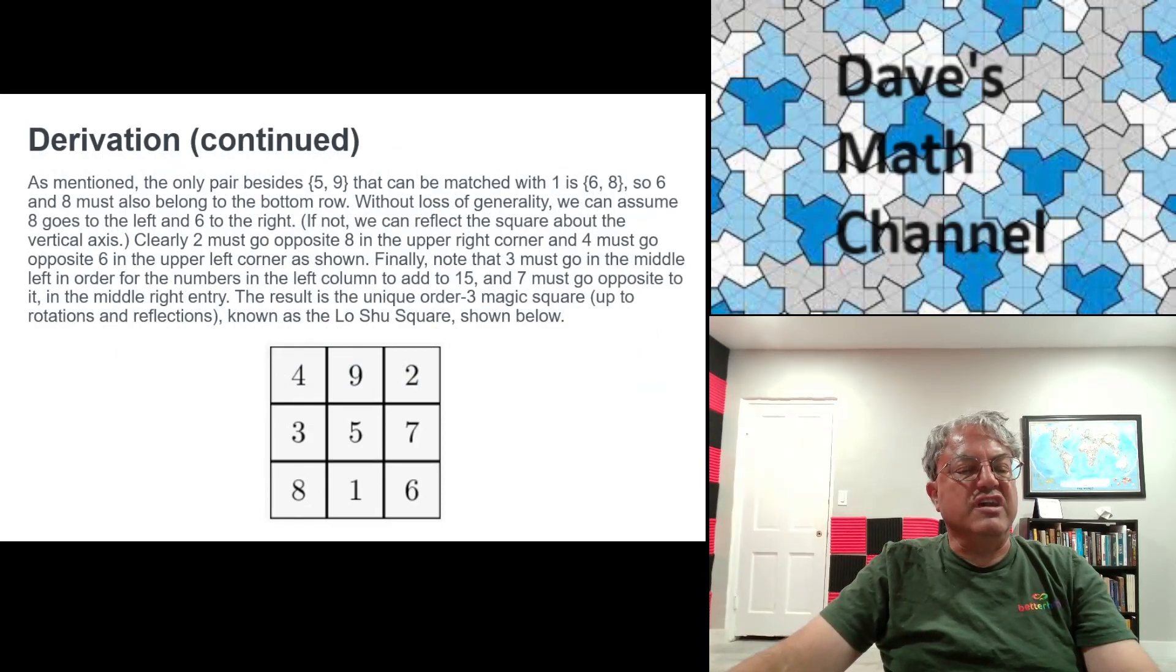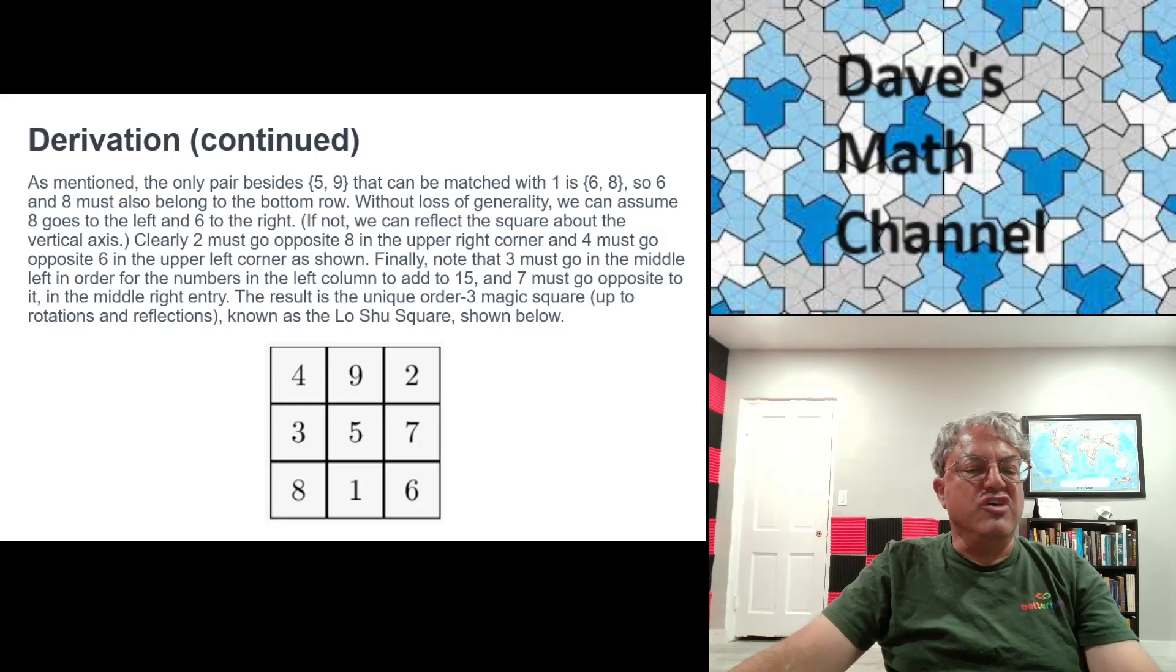Now we just have to know where everything else goes. So we did 1-5-9. What can we do next? Well, we already determined, I didn't draw it in the last slide, but we already determined that the only other numbers that can go in the same row as 1 are 6 and 8. And we could have written it as 6-1-8. It doesn't really matter because one's a reflection of the other. And remember, we don't care about reflections. So I'm just drawing the 8 on the left and the 6 on the right. It doesn't really matter.